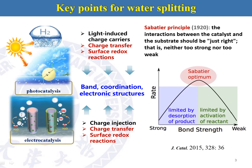For water splitting, there are two pathways. One is photocatalysis, another is electrocatalysis. The key points for these two processes are highly efficient catalysts. For photocatalysis, it contains three steps: light-induced charge carrier production, charge transfer, and surface redox reactions. For electrocatalysis, it also contains three steps: charge injection, charge transfer, and surface redox reactions. Charge transfer and surface redox reactions are the two shared steps, and they are very important for catalyst efficiency.